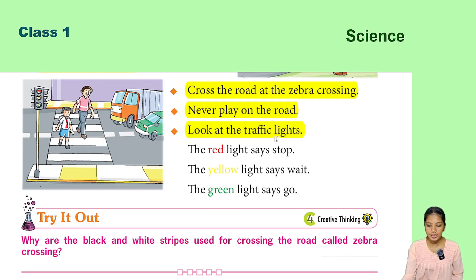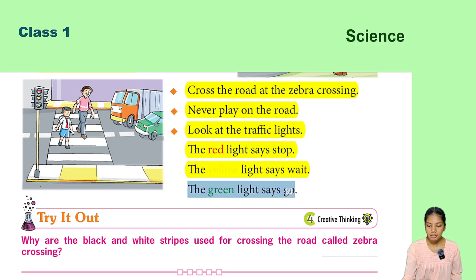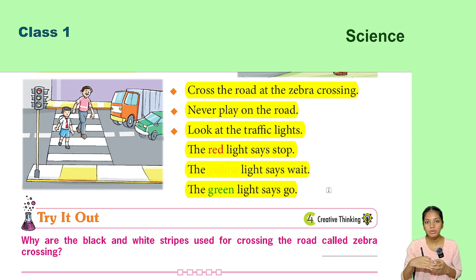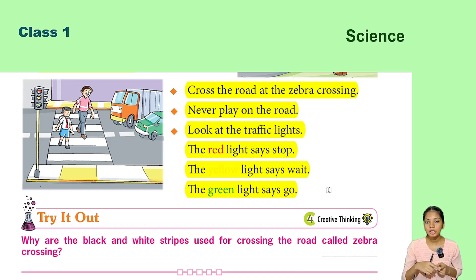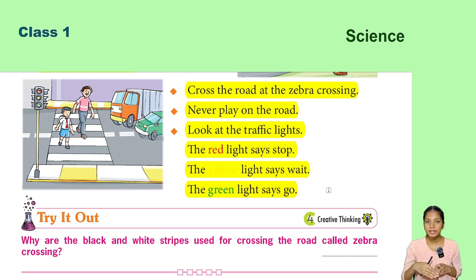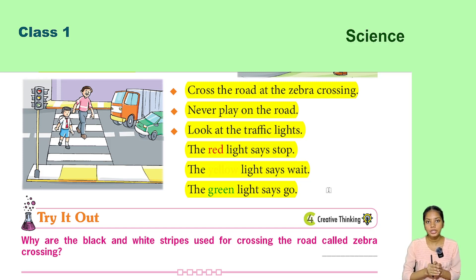Look at the traffic lights. The red light says stop, the yellow light says wait, and the green light says go. Red means you must stop and cannot move. Yellow means wait. Green means you can walk and move.